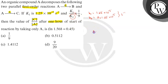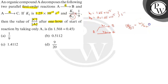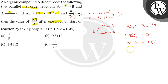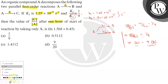For this parallel reaction — A giving B via k1 and A giving C via k2 — the ratio b/c equals k1/k2 because both are first-order reactions. So the amount of B produced to amount of C produced is k1/k2 = 1/9. Therefore, at any time, c = 9b.